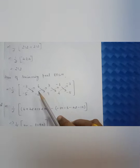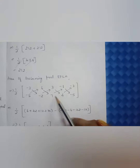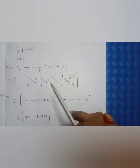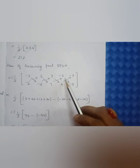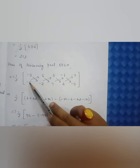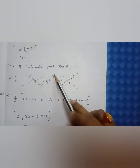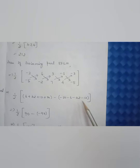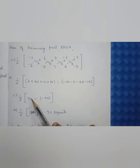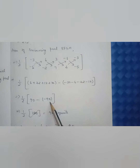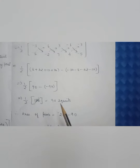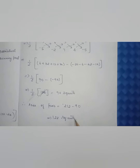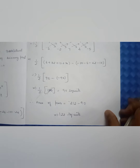For area of swimming pool EFGH: half × | ... |. With the inner vertices: (−)(−)3×2=6, 6×7=42, 3×4=12, (−)(−)5×6=30; subtracted row: 5×6=30, (−)3×2=−6, (−)7×6=−42, (−)4×3=−12. Simplifying gives 90 − (−90) = 90 + 90 = 180; half × 180 = 90 square units. Finally, area of patio = 212 − 90 = 122 square units.